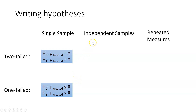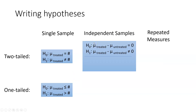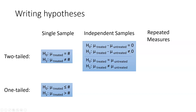In the case of an independent samples t-test, the null hypothesis is that the mean of the treated group minus the mean of the untreated group equals zero — there is no difference. The alternative is that the difference is something other than zero — the treated group got either higher or lower. There's another way to write this: simply that the mean of the first group and the mean of the second group are the same — or not the same in the alternative hypothesis.